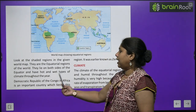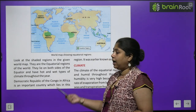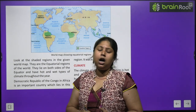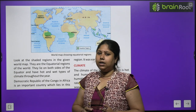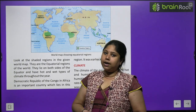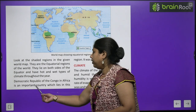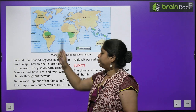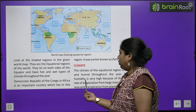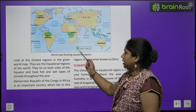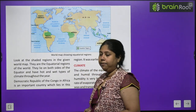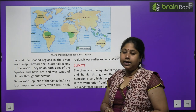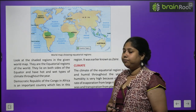These equatorial regions have hot and wet type of climate throughout the year, because they are near the equator. There is a lot of heat and rainfall throughout the year. Democratic Republic of Congo in Africa — this green portion — is an important country in this region. It was also earlier known as Zaire; the country's earlier name was Zaire.